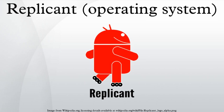Replicant is sponsored and supported by the Free Software Foundation, which also hosts the Replicant source code. The following table lists major releases of Replicant.